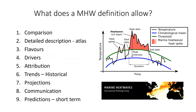Having a standardized definition allows us to compare events across different regions, build detailed descriptions of extreme event histories in an area, and understand past impacts on resource users and managers. It also helps us understand drivers of marine heatwaves, attribute the impact of climate change, examine historical trends, make future projections, communicate clearly to media and interested observers, and provide short-term prediction over weeks to months.